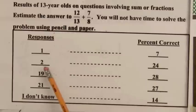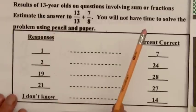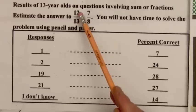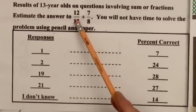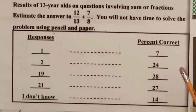Twenty-four percent got the correct answer of two. They should think about twelve over thirteen — you've got almost the whole thing, twelve parts out of thirteen. Seven over eight we know is close to one. So this test result indicates some of the importance of students being able to verbalize and understand fraction symbols.